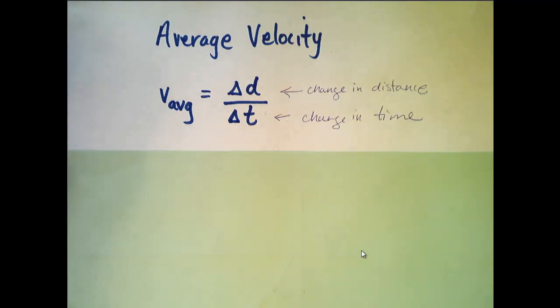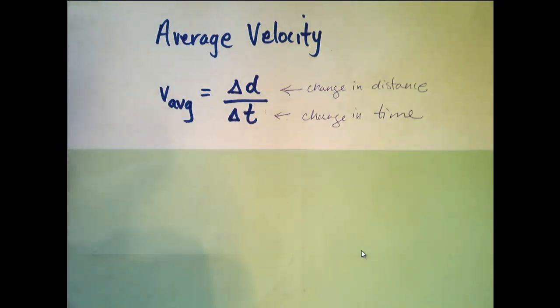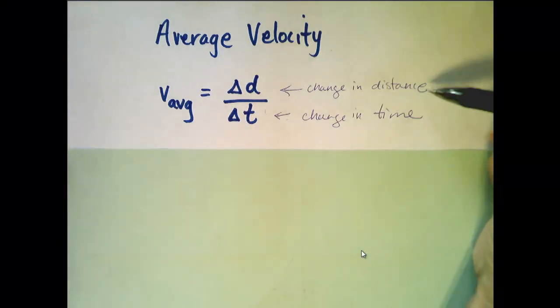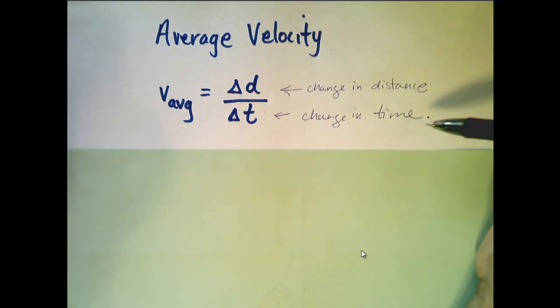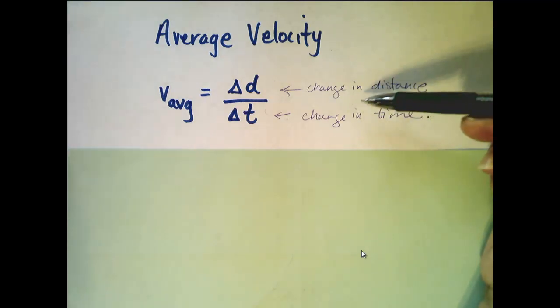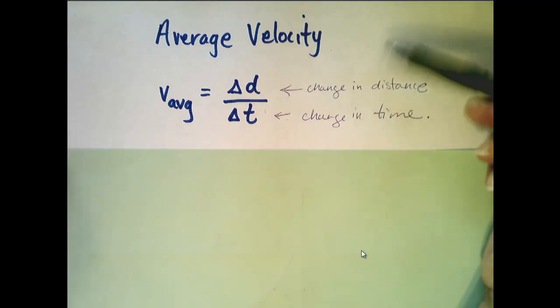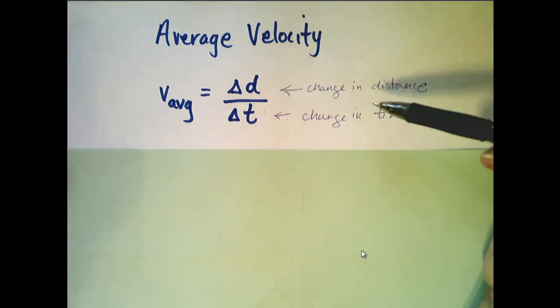We begin the discussion of instantaneous rates of change with average rates of change. And we begin that discussion with the average velocity, which is an average rate of change. It is measured by the change in distance divided by the change in time. The reason we start with this example is because it's a concept that we are all intuitively familiar with.